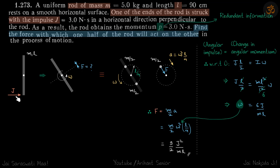We have a rod that's given an impulse J. We need to find the force with which one half of the rod will act on the other. The problem also states that the rod obtains momentum P — this is redundant information because impulse equals change in momentum. So J and P have the same value, both are 3 Ns. Our answer can be written in terms of J or P; let's use J since that's given first.